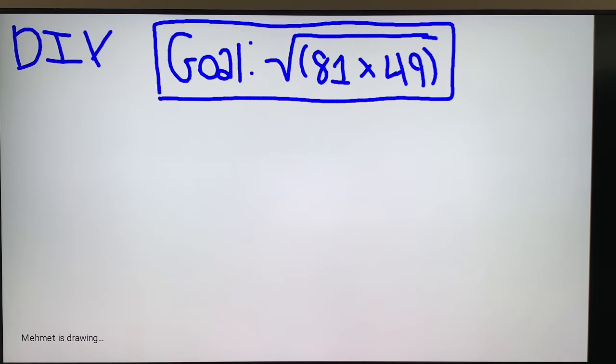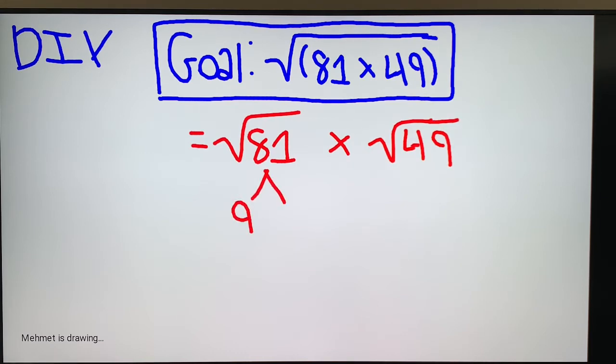To begin for the answer, we're going to split up using our property. This is equal to root 81 times root 49. 81 is a perfect square, it breaks up into 9 and 9. 49 is also a perfect square, it breaks up into 7 and 7.